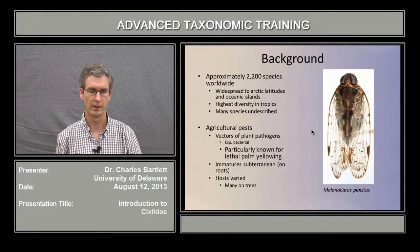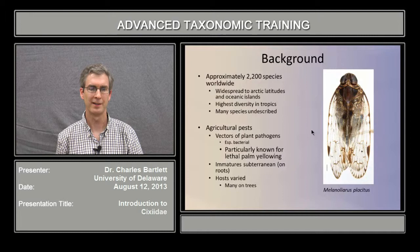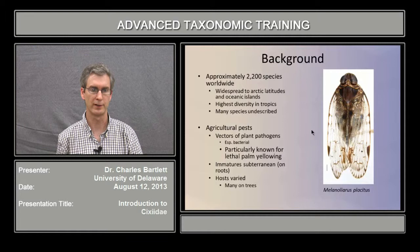The host relations of 6-seeds are poorly understood. Immatures are subterranean, feeding on roots, and adults are very mobile, making host associations doubtful. 6-seeds are seldom numerous enough to directly damage crops, but they are important vectors of plant pathogens, particularly phytoplasmas.